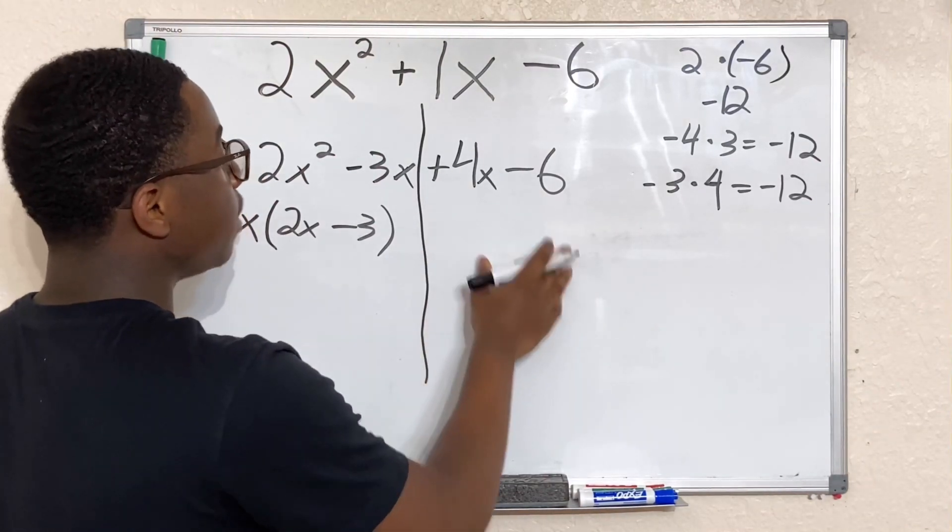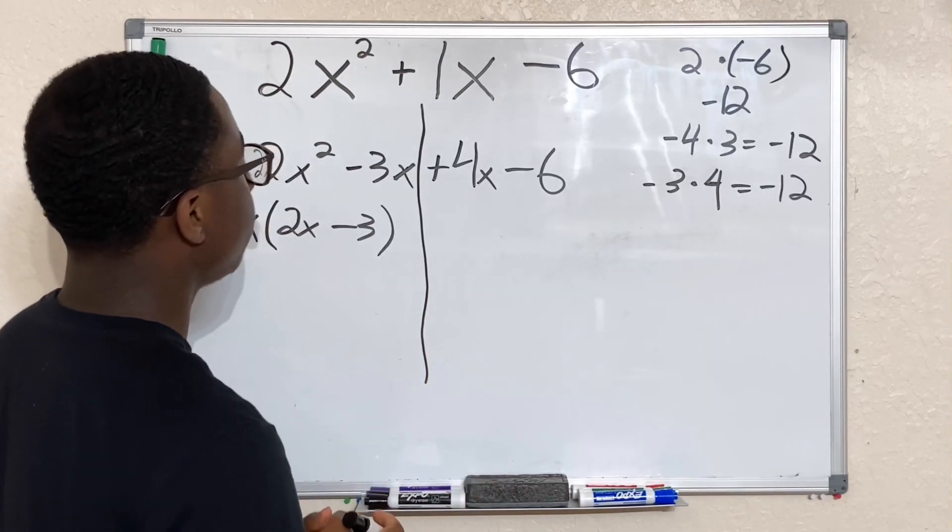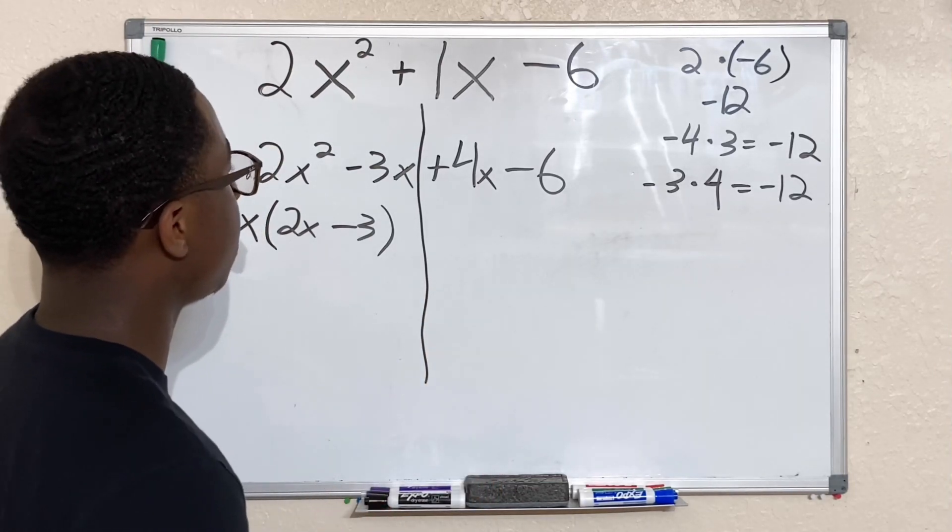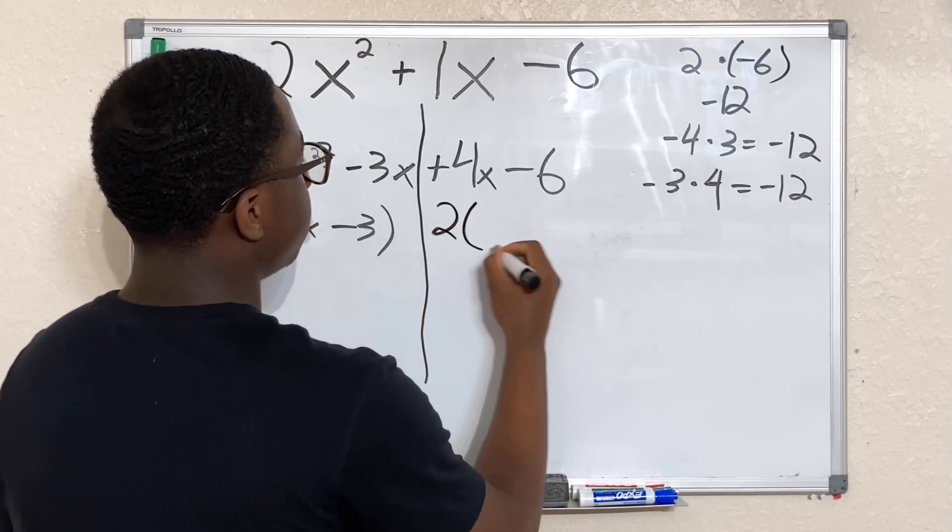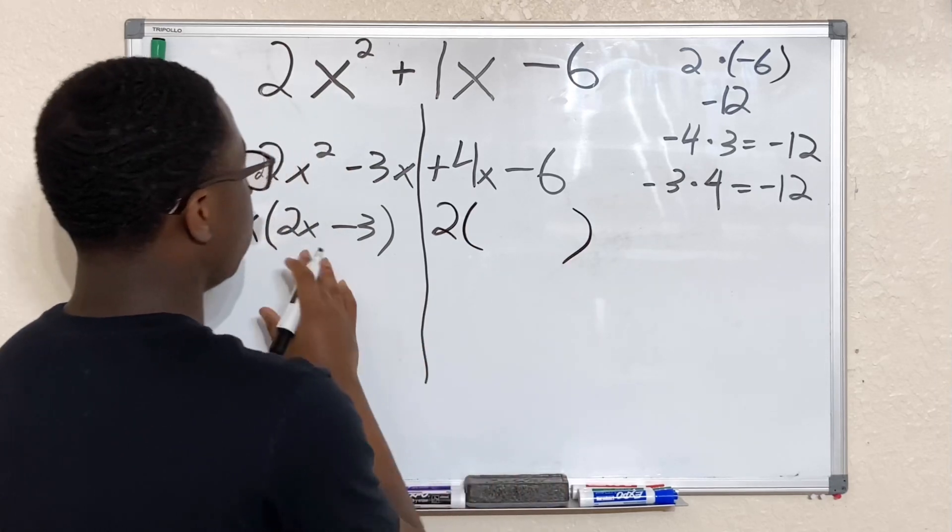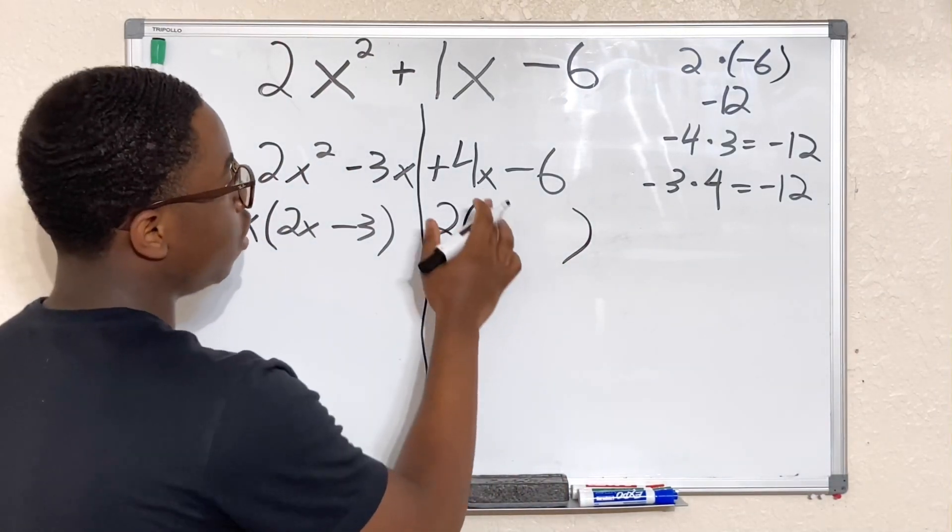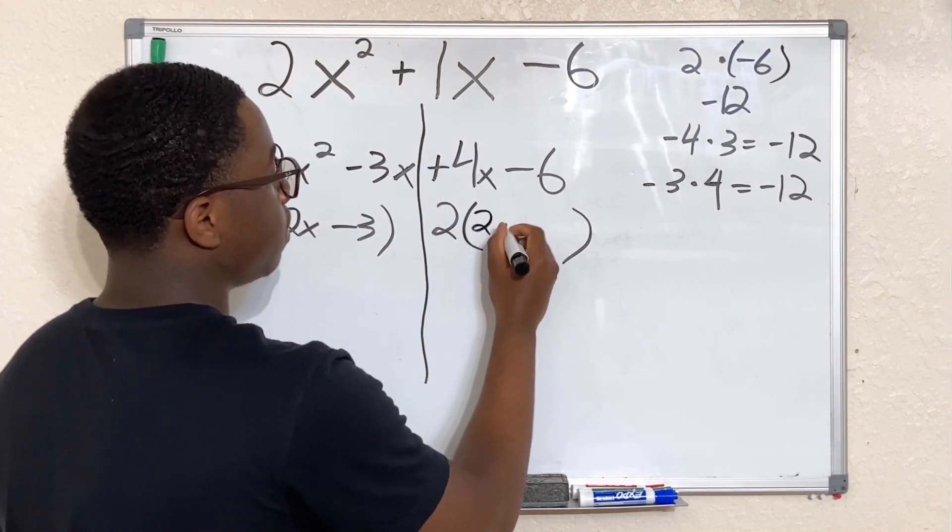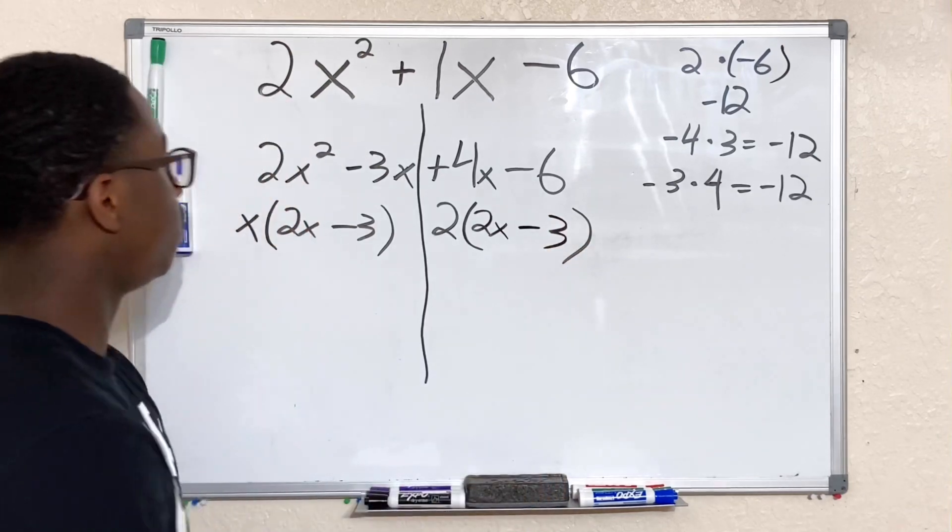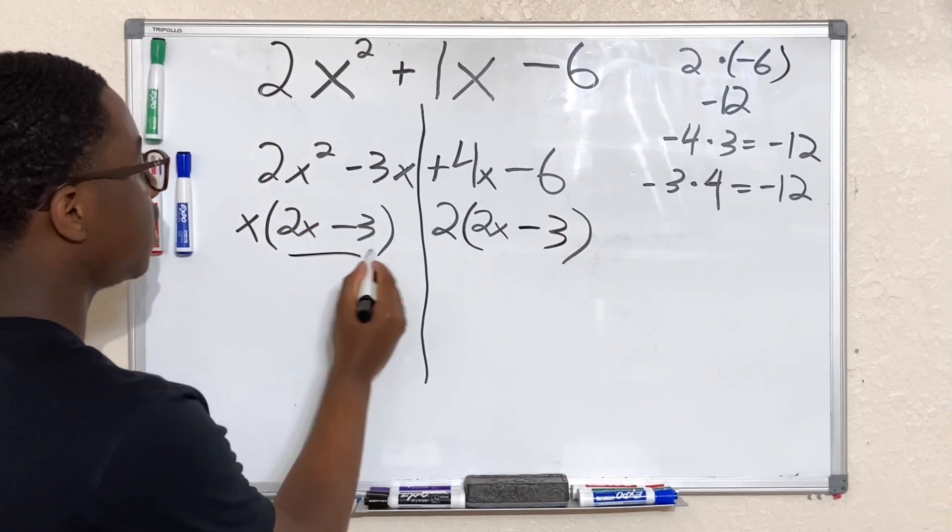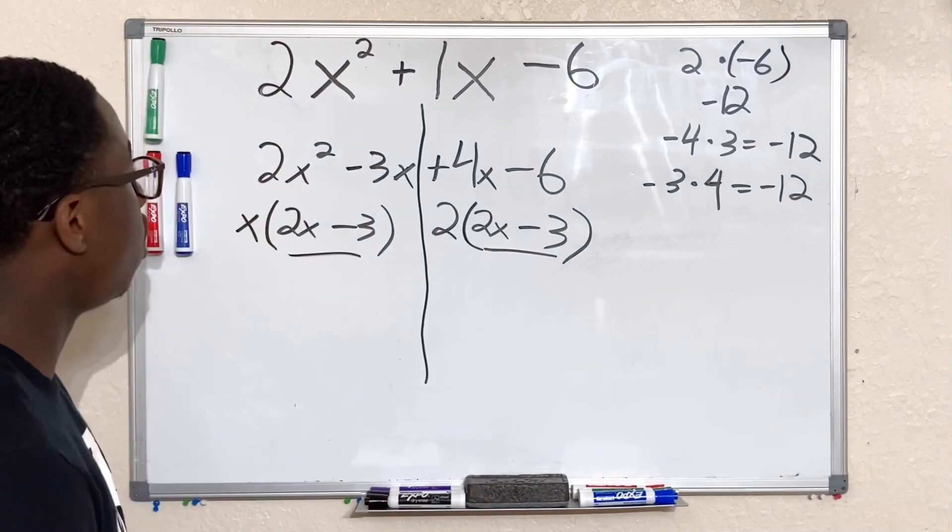Now let's go ahead and factor this side. So now we have 4x minus 6. How can we factor that? We can go ahead and take out 2. So now we have 2 on this side. And we have to make sure our second factor here is the same here. So 4x divided by 2 will give us 2x, and -6 divided by 2 will give us a -3. So boom, we have it here. This is the same as this, meaning that our factoring was correct.